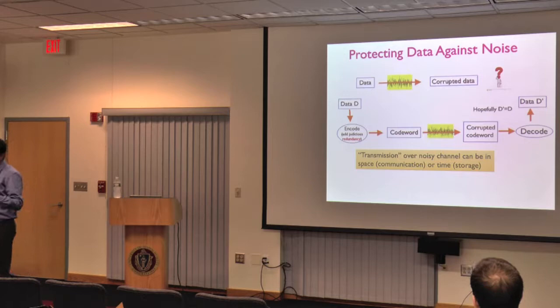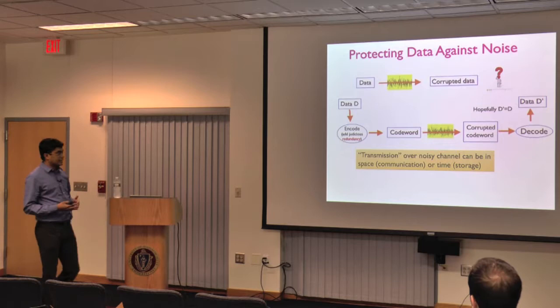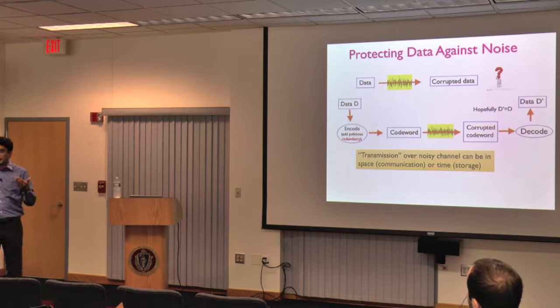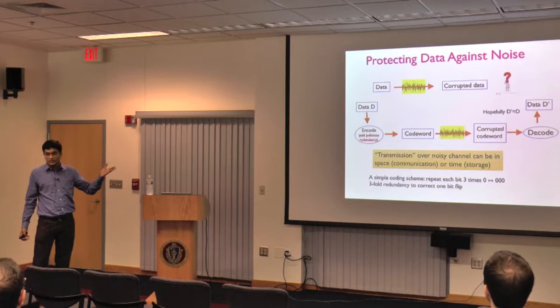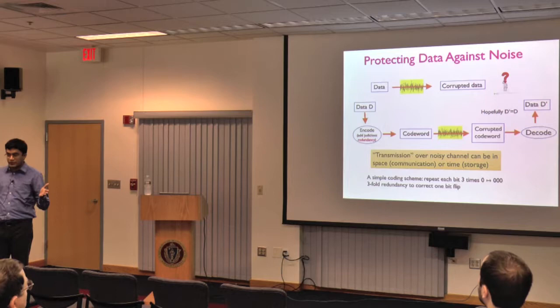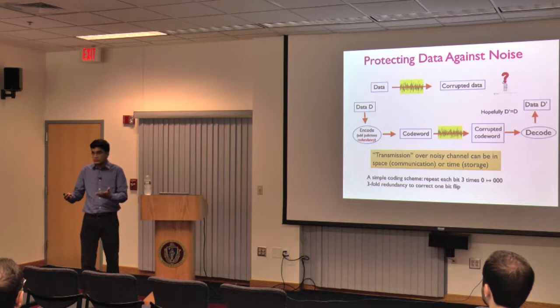Transmission in space means you can communicate across the internet, or increasingly important, you could write data on the cloud and read it later — that's communication in time because you're reading data at a later time. A very trivial code would be: whenever you want to send a bit, just repeat it three times. That's threefold redundancy, and if one of the bits gets flipped, you can take the majority of the three copies and get the correct answer.